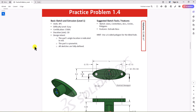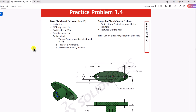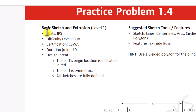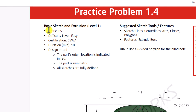As I mentioned before, the first and most important step is always to check the unit of measurement. In this question, the unit of measurement is IPS — in other words, we're going to work with imperial units. If you remember from previous videos, we always worked with metric units, but this time it's different, so we need to ensure that we change our SOLIDWORKS setting to IPS.